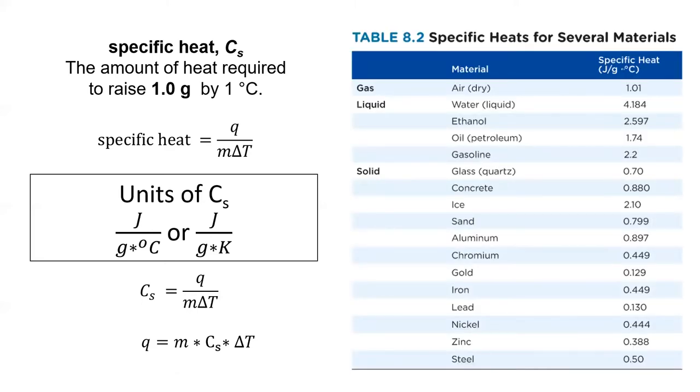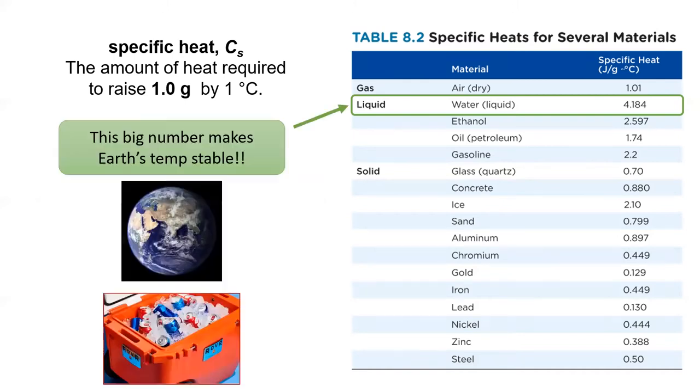Every object in the universe has a unique specific heat, and you won't need to memorize any in my class. But I would like to point out that the specific heat of water, 4.184 joules per gram Kelvin, is astronomically higher than any other substance on the list. Water has the highest specific heat of any common substance on our planet.